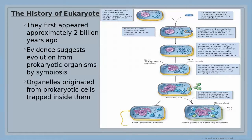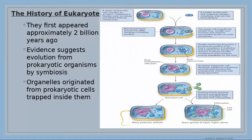Eukaryotic cells are bigger than prokaryotic cells. Prokaryotic cells are bacteria. Other organisms are eukaryotic, like protozoa, algae, plants, fungi, and animals — they are all eukaryotic organisms.